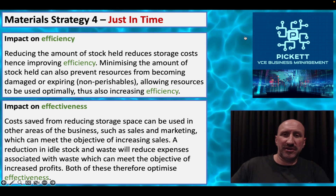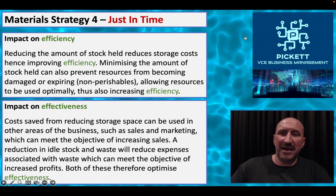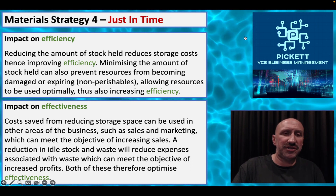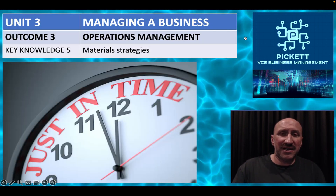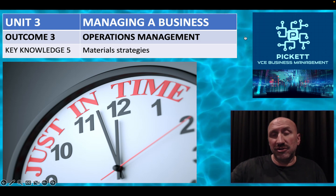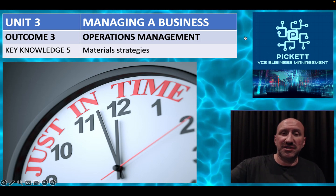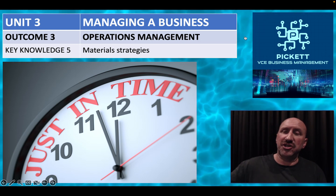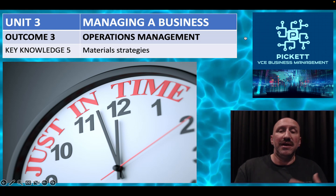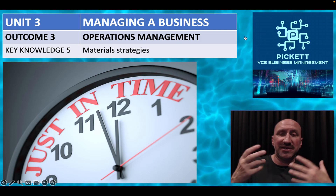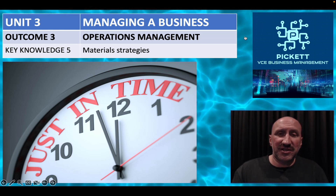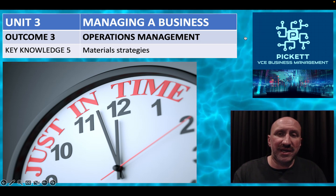The efficiency and effectiveness impacts are on screen — nothing new, restating what we've already discussed. That's basically materials management covered. In the next key knowledge dot point we'll look at quality strategies — there are three of those. The pattern remains: explain the strategy, give advantages, give disadvantages, then discuss the impact on efficiency and effectiveness, as that's how questions will be framed. See you in the next video — key knowledge six, quality.